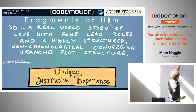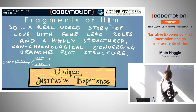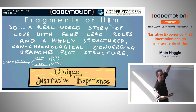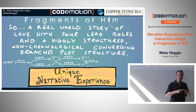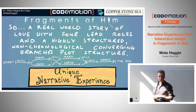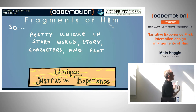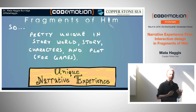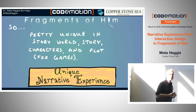We had a preset start and end — a mostly linear game, with variation within the order of events but not within the emotional journey. The emotional journey takes precedence over chronology. You're jumping from 2006 back to 1985 through to 1997, but the emotional journey is consistent. These are just memories — no sci-fi. In essence, the game is a real world story of love with four lead roles and a highly structured non-chronological converging branches plot structure. Drama is in film and television, but drama is not a major genre in video games at the moment.